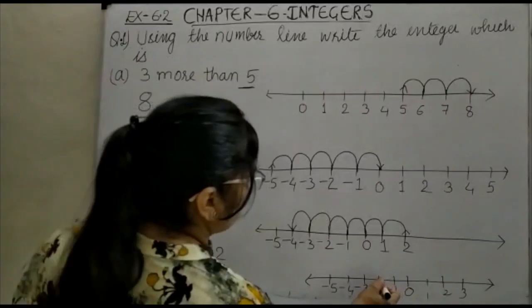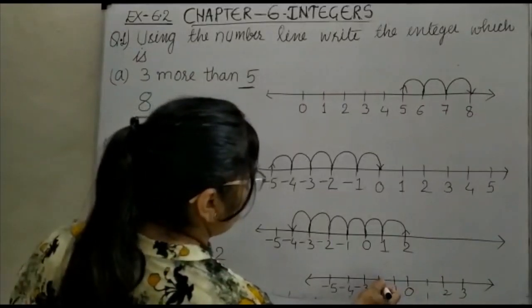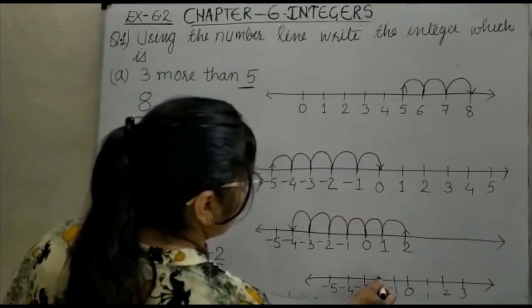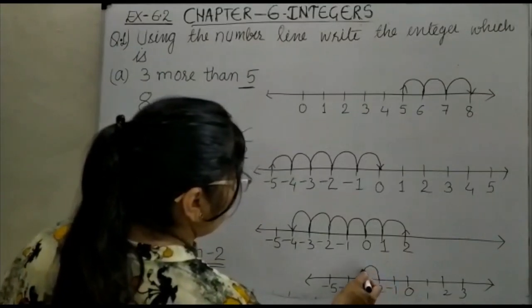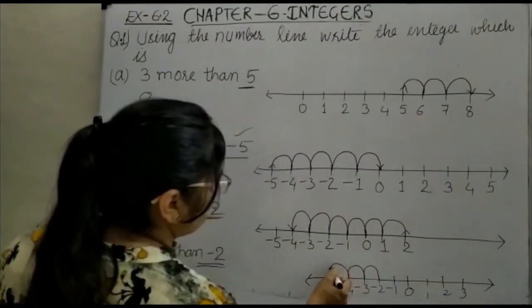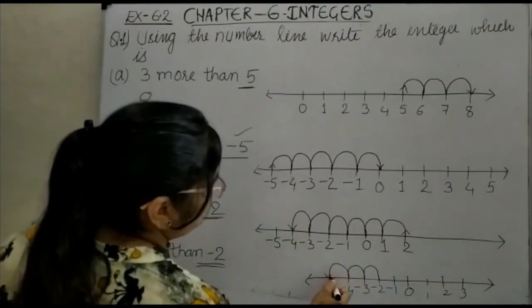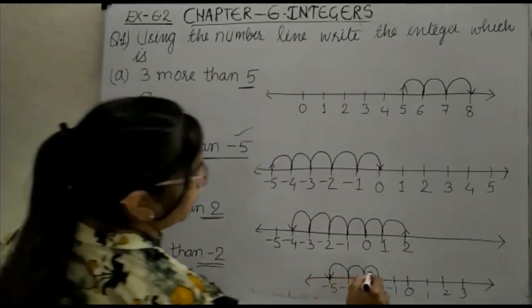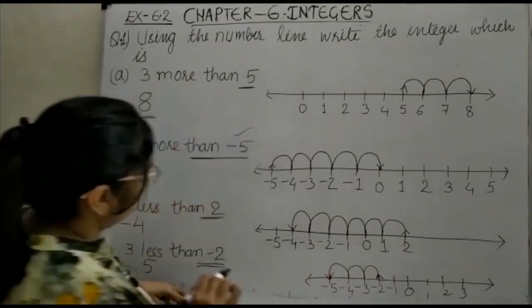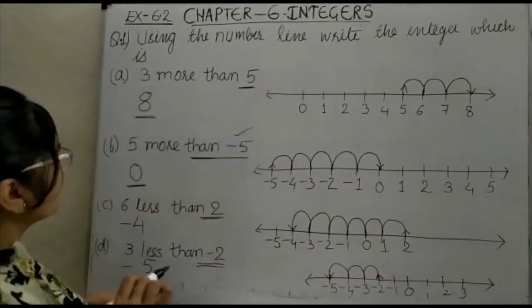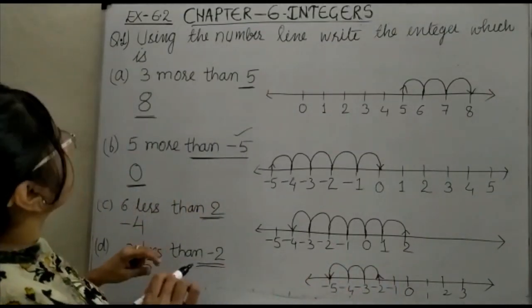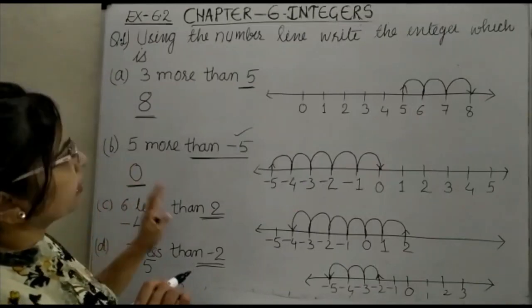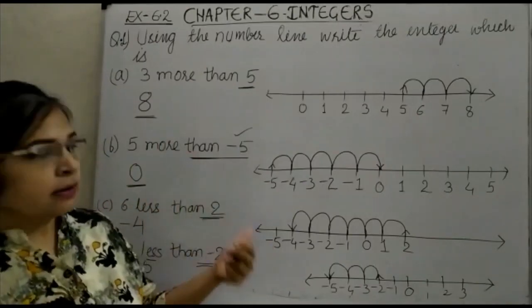You can see here: starting from minus 2, we move 1, 2, and 3 steps to the left. So we are at minus 5. Our starting point was minus 2, and the answer is minus 5. This is how we can express the given integers on a number line.